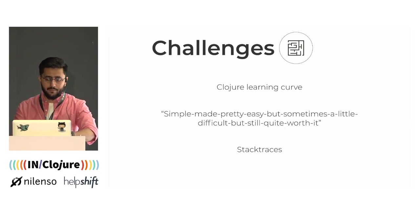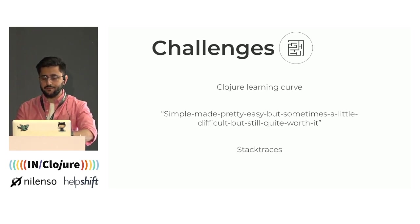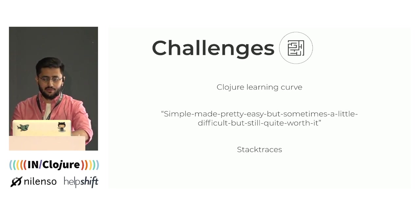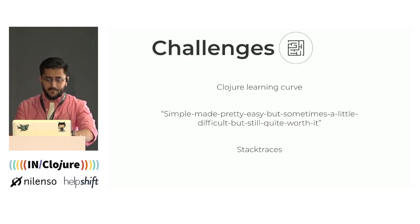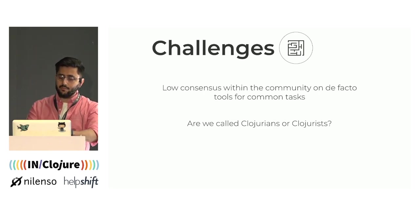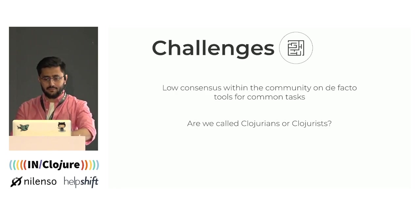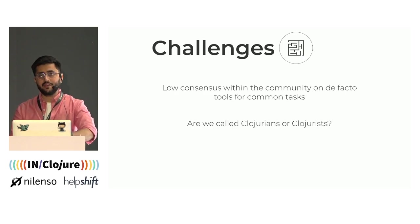We obviously faced a few challenges along the way, the primary one being the Clojure learning curve. It's definitely a thing. I know the tagline reads 'simple made easy,' but I'd probably change it to 'simple made pretty easy, but sometimes a little difficult, but still quite worth it.' And the stack traces — as beginners, especially working on lazy sequences and macros, it wasn't the easiest thing to come to grips with, because it's not very apparent where the error has really occurred and what caused it. Also, there seems to be low convergence within the community on de facto libraries and frameworks, and nowhere was this more intensely felt than when we tried to self-identify as Clojure developers and didn't know whether to call ourselves Clojure-ians or Clojure-ists.